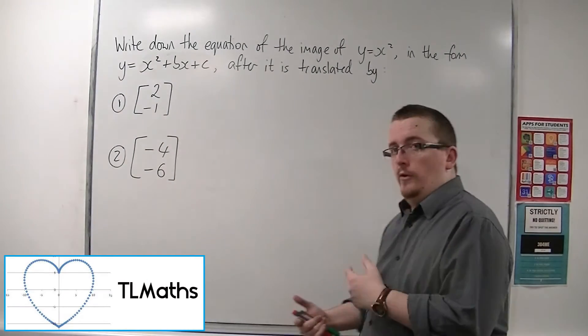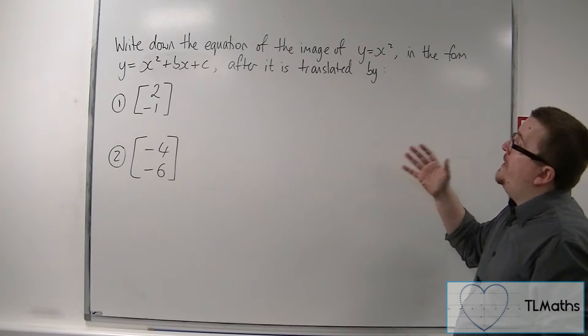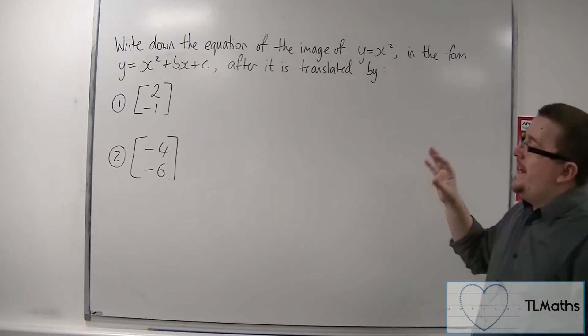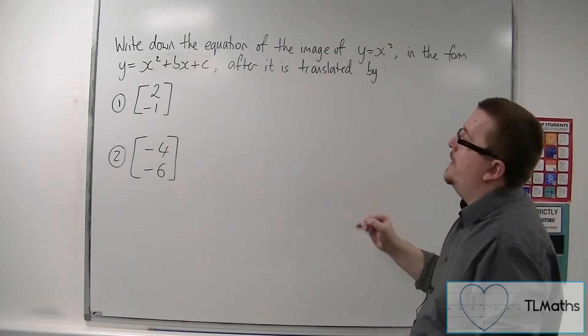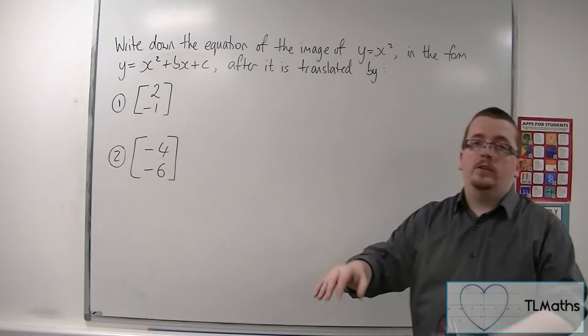In this video we're going to reverse the process. So let's say we want to write down the equation of the image of y is equal to x squared in the form y is equal to x squared plus bx plus c after it is translated by these two vectors.